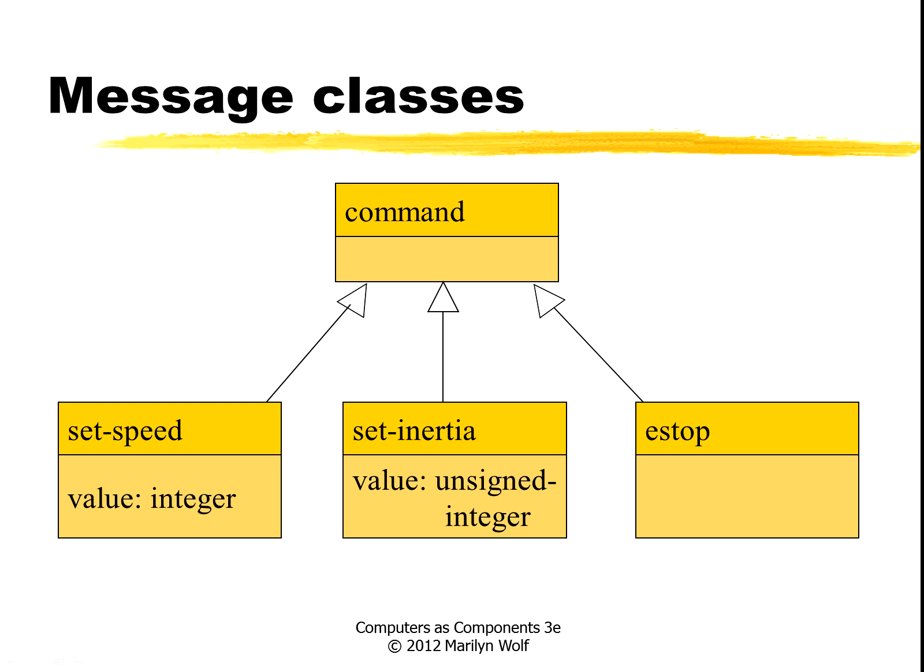So how would we model this in UML? We would have a generic command class — all of the commands have to have a basic form — and then we can have separate classes for the various types of messages that we need: set speed, set inertia, and e-stop.